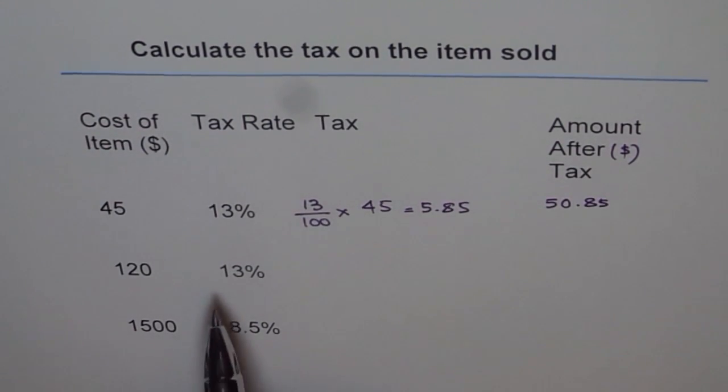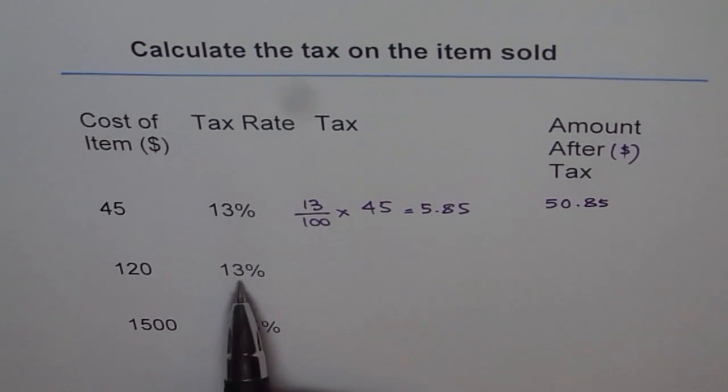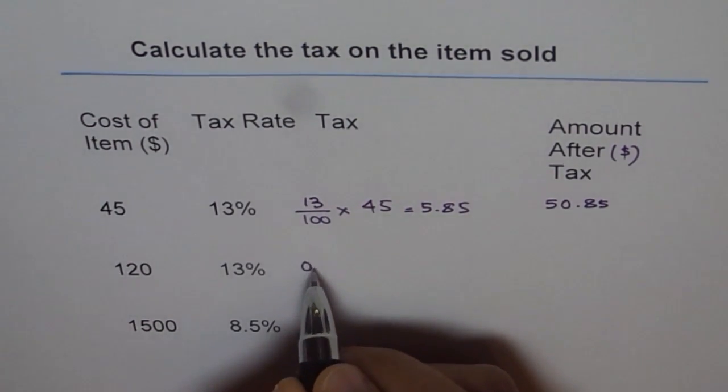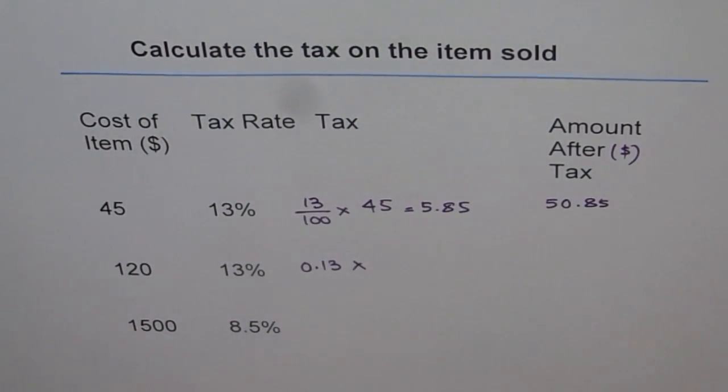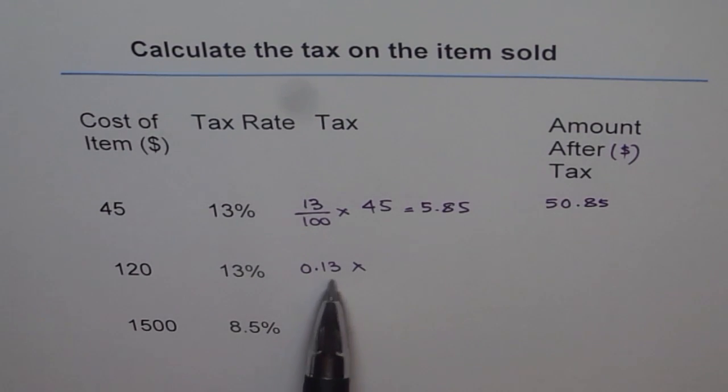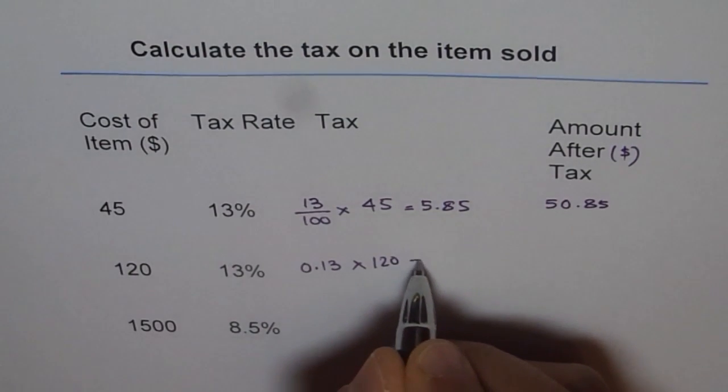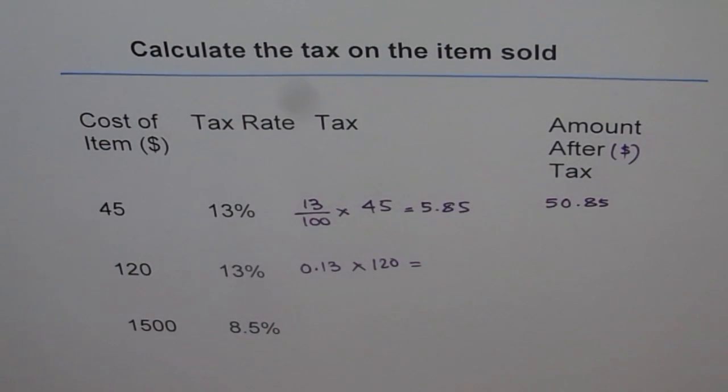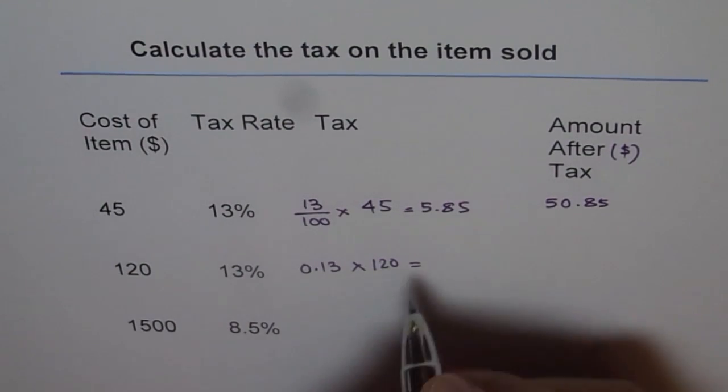Sometimes what we do is we first divide 13 by 100 and write it in decimals. So what we can do is we can write this as 0.13. You have done the worksheet on converting percent into decimals? If you haven't, go through that worksheet. So you can also convert percent into decimals and use 0.13 instead of 13 over 100. Both are same. So 0.13 times 120 gives you the answer. Use calculator and say 0.13 times 120 equals to 15.6.